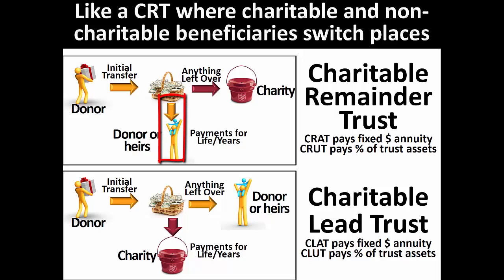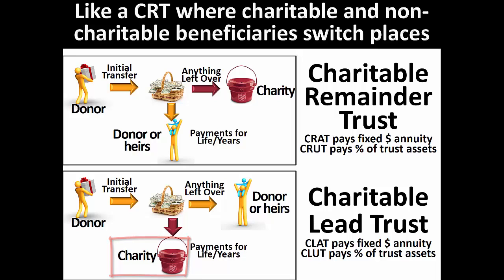The charitable remainder trust also permitted variations that could lower the ongoing payments, such as a net income charitable remainder trust (NICRUT), a net income with makeup charitable remainder trust (NIMCRUT), or a flip charitable remainder unitrust (FLIPCRUT). None of these options are available with a charitable lead trust because the ongoing payments in a charitable lead trust go to charity and therefore may not be reduced.